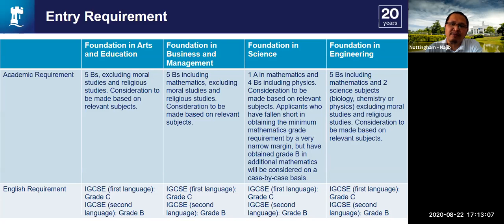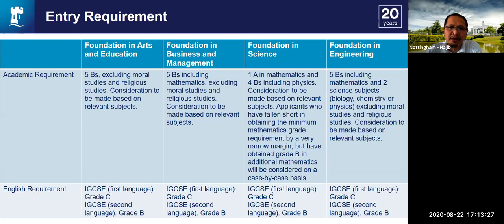That sounds high but that is our standard. MUFI students, for example, report their results in percentage — we require minimum 75%. For MPharm Pharmacy, we look for 80% per subject. In terms of tuition fees for foundation, Arts and Business are quite similar. Engineering foundation is RM9,500 per year or RM28,500 total; Science foundation is RM9,000 or RM27,000 total. One year is three semesters. Students can visit our university website for more detailed tuition fee information.